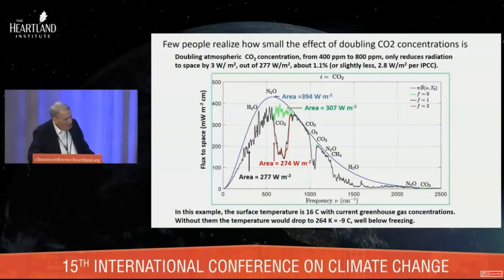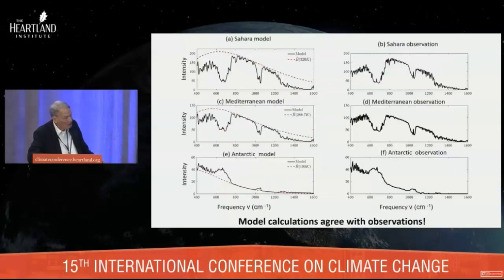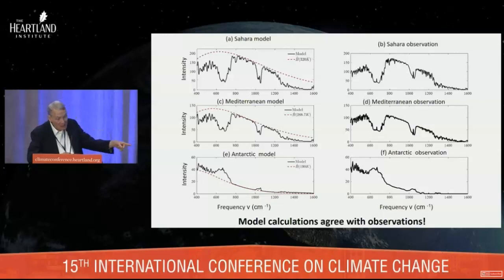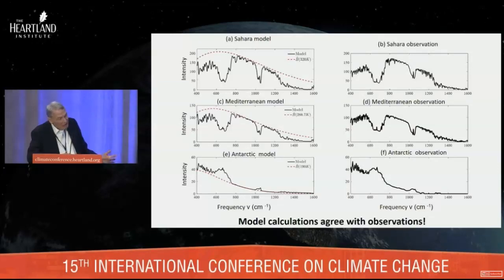If you think this is just a theoretical calculation, here's what happens when you use these codes to compare what satellites actually see. On the left are model calculations with the same codes, and on the right are satellite observations — with no adjustment, nobody has tried to fit any curves. You can hardly tell the difference. I would really have to point out which is model and which is observation.